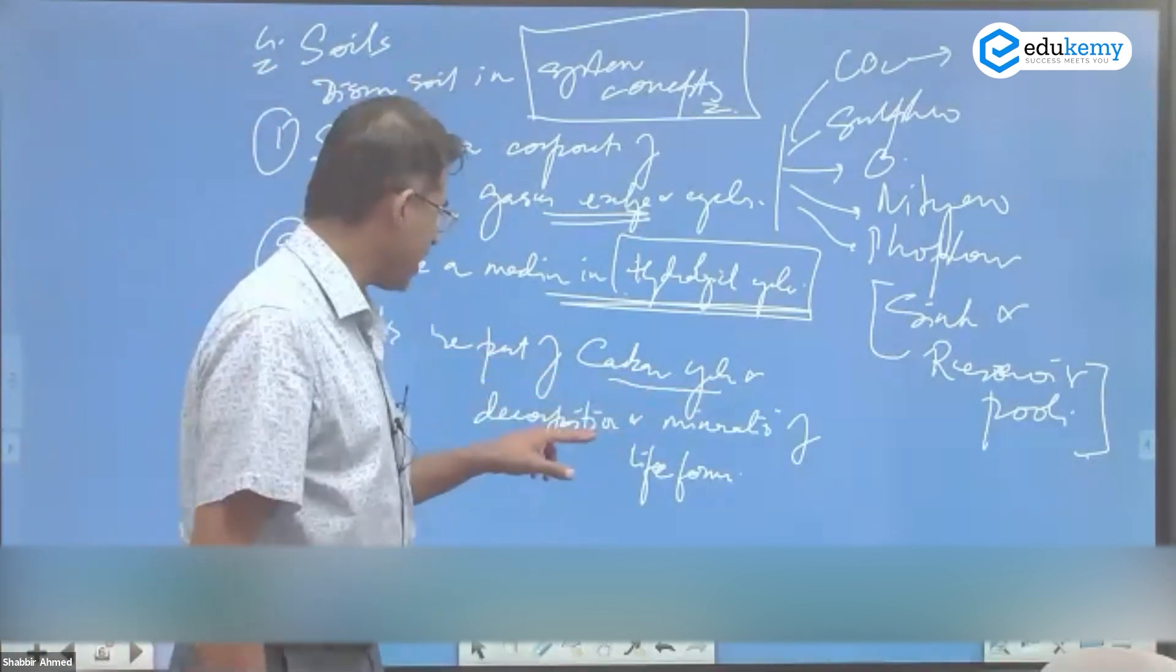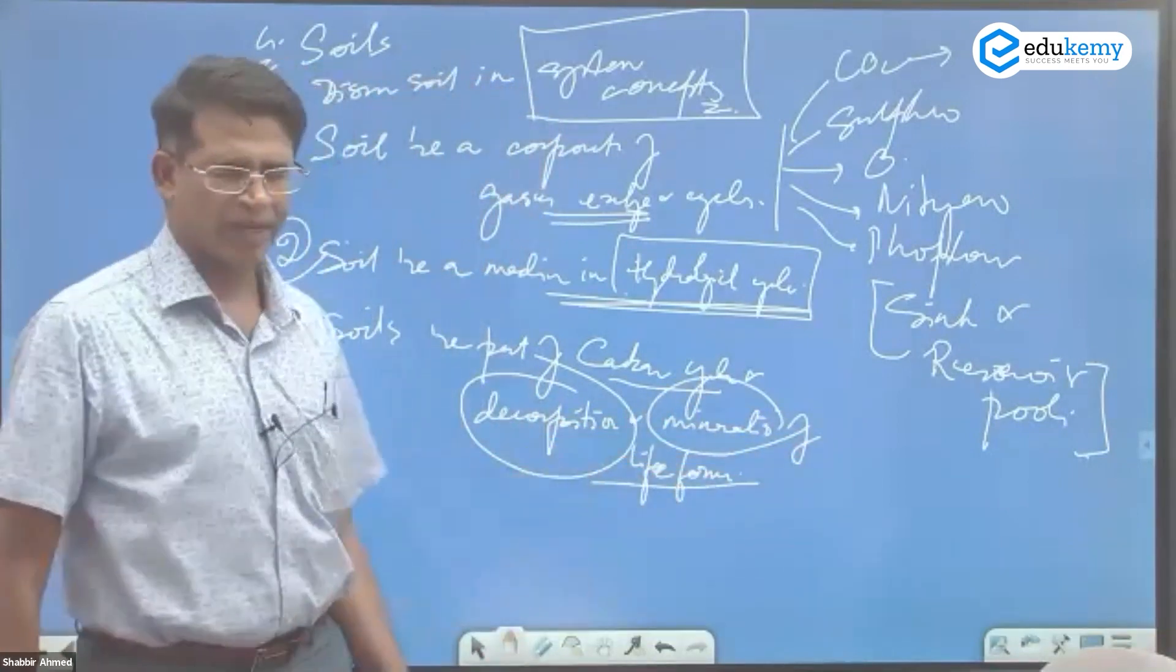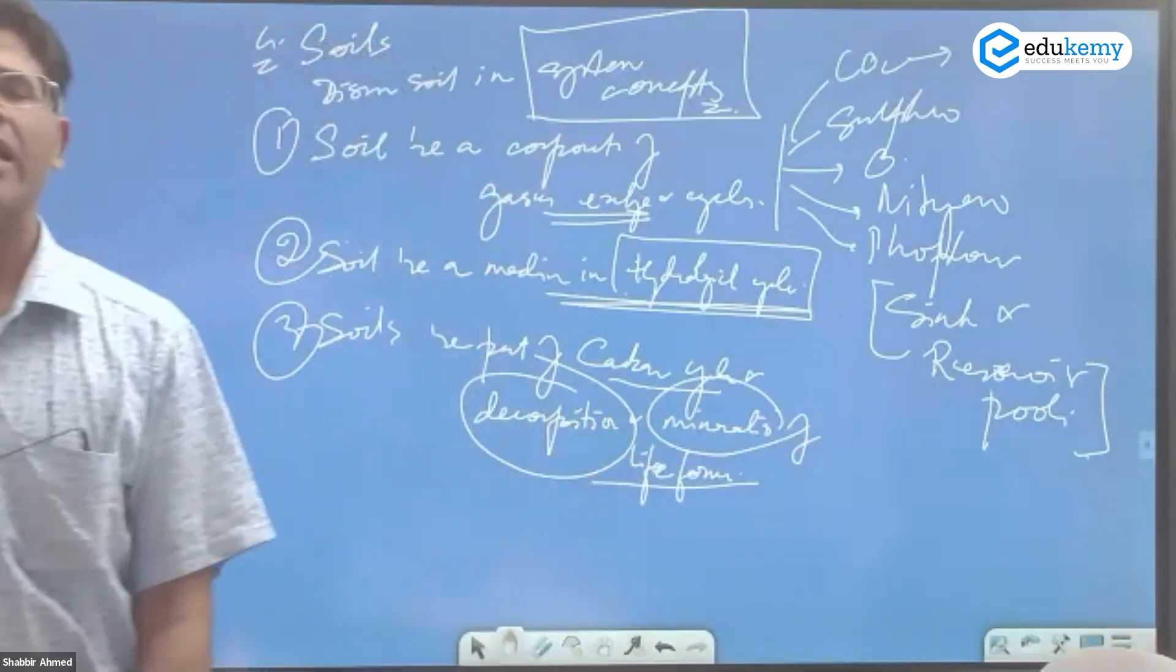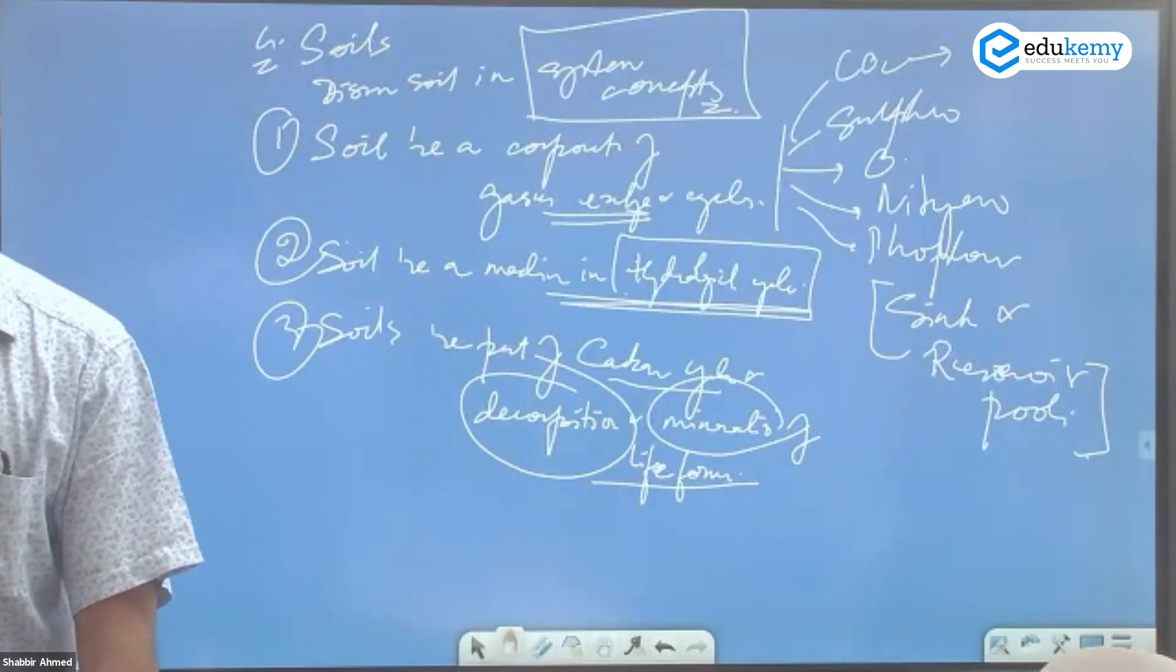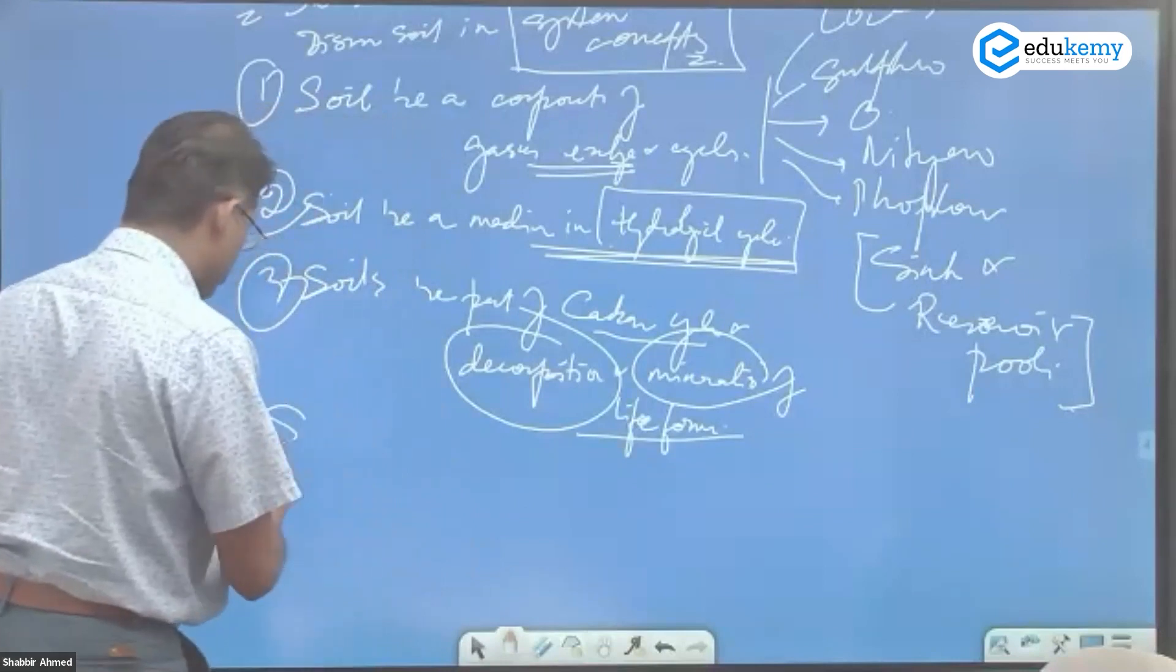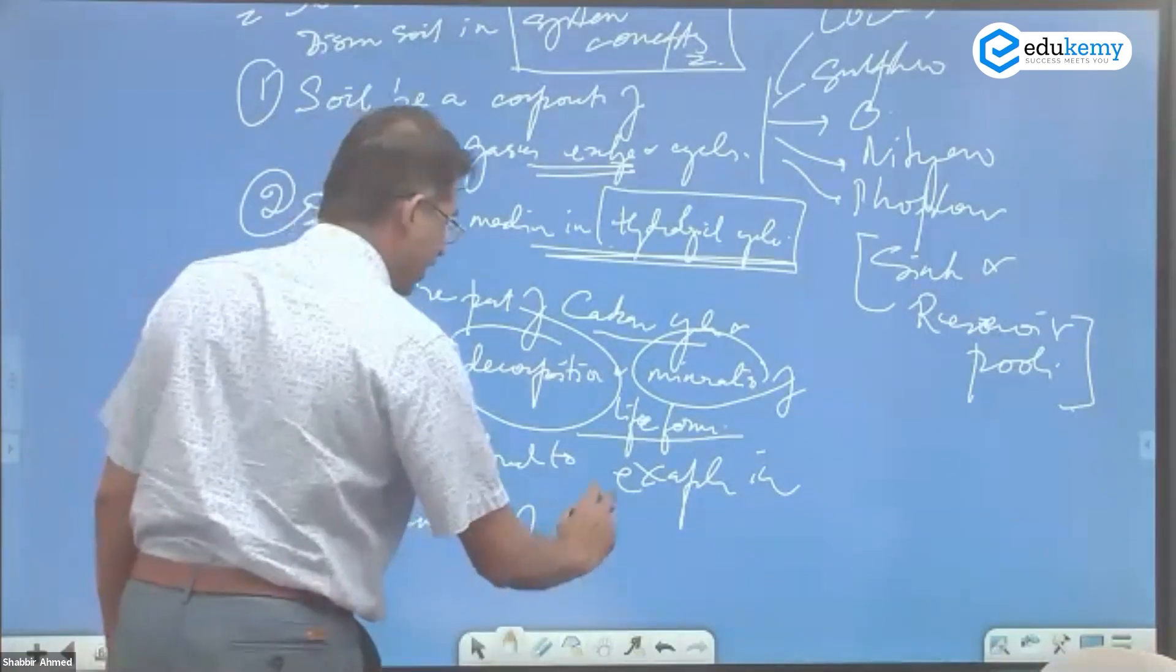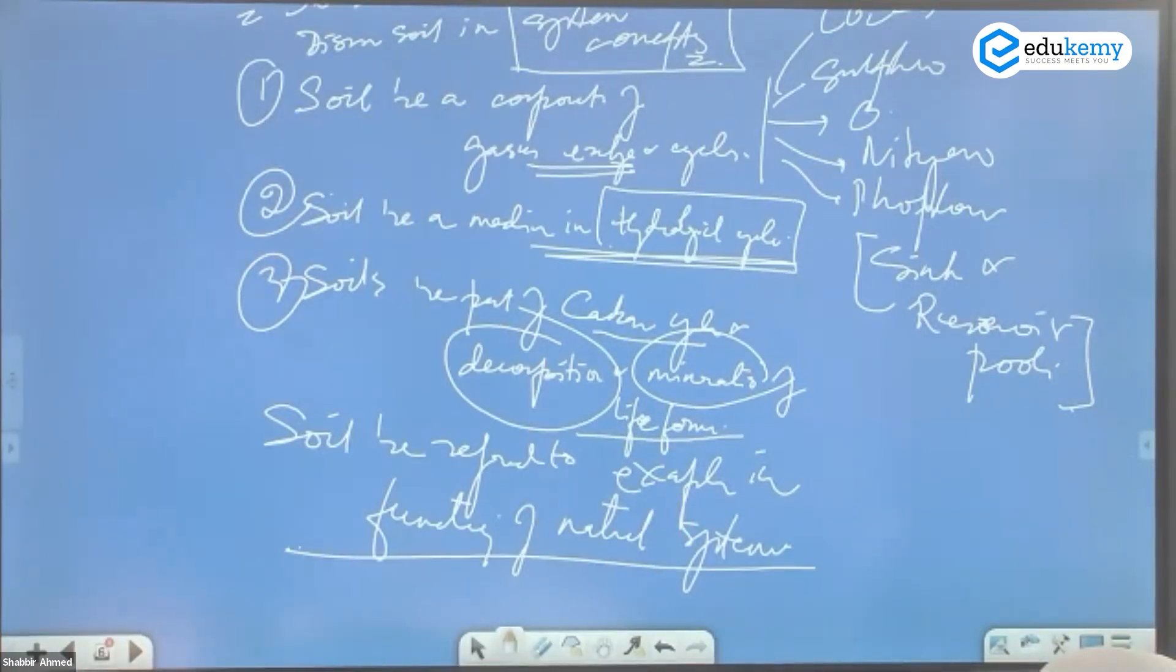Soils are also part of the carbon cycles in the decomposition and the mineralization of the life forms. When a life form dies, it decomposes, it ultimately becomes minerals, the bare minerals, and all of this happens in the soils. So soils are not dirt that accumulates. Soil is not collection of sediments, soil is not collection of clay.